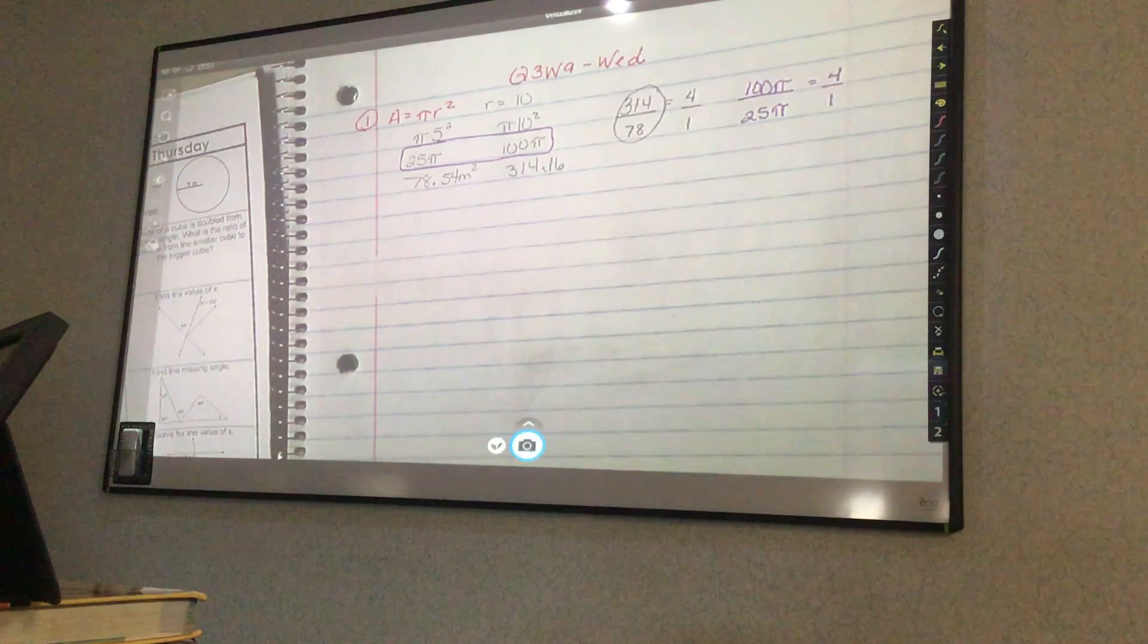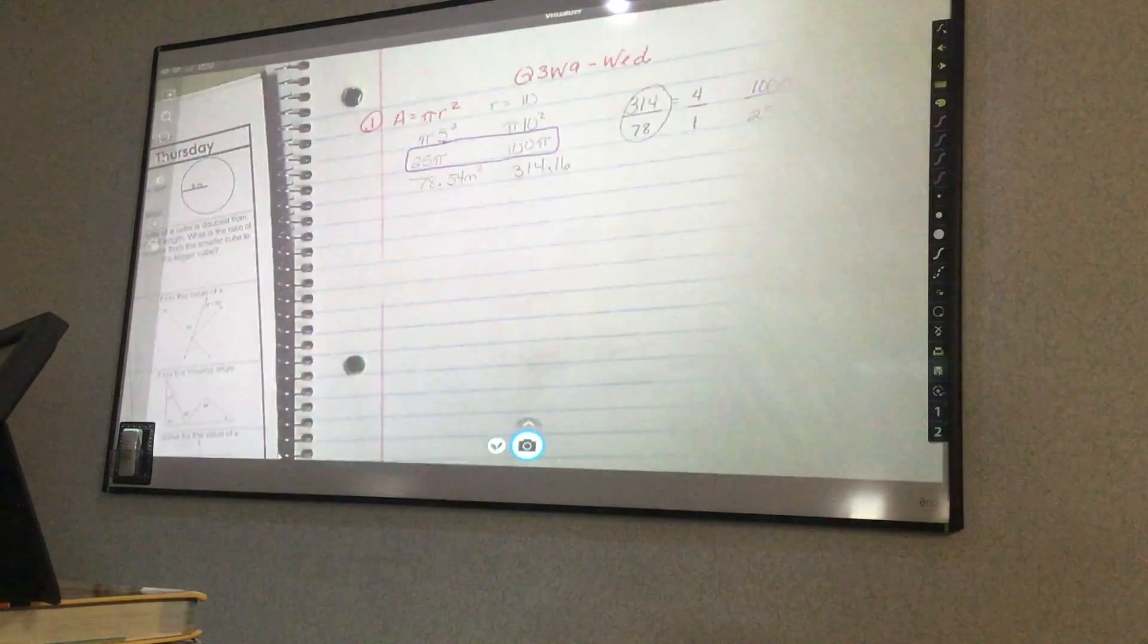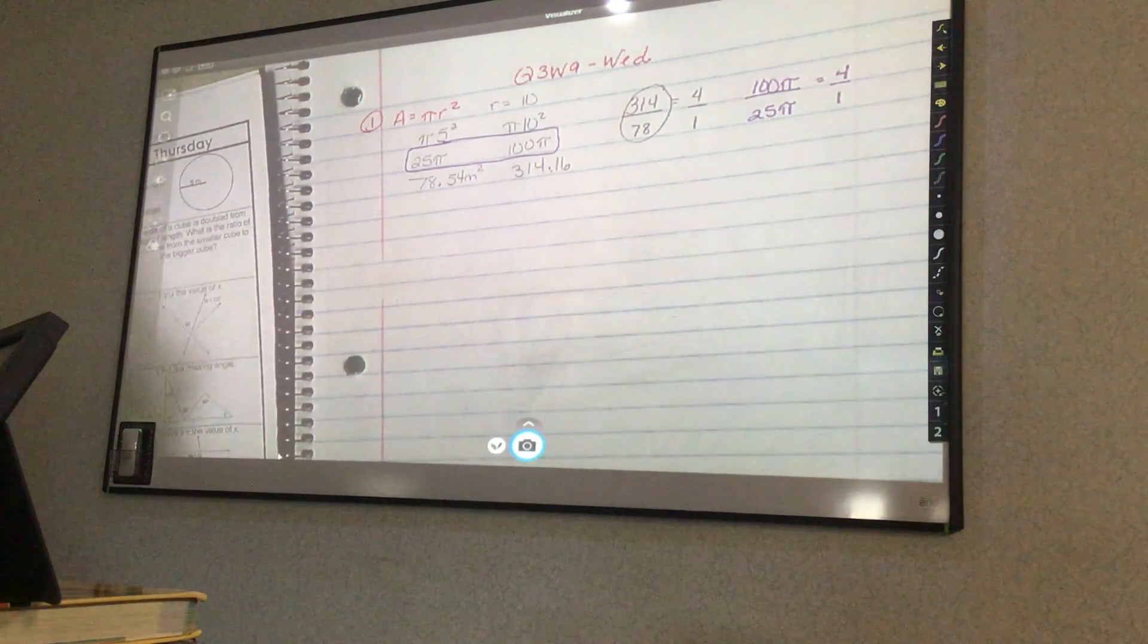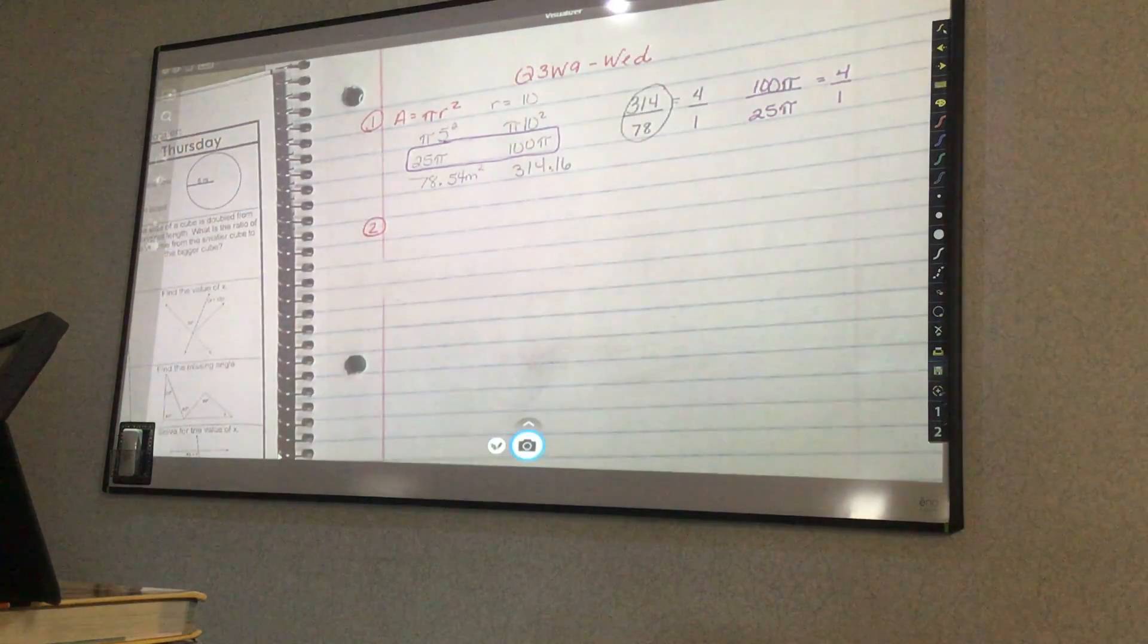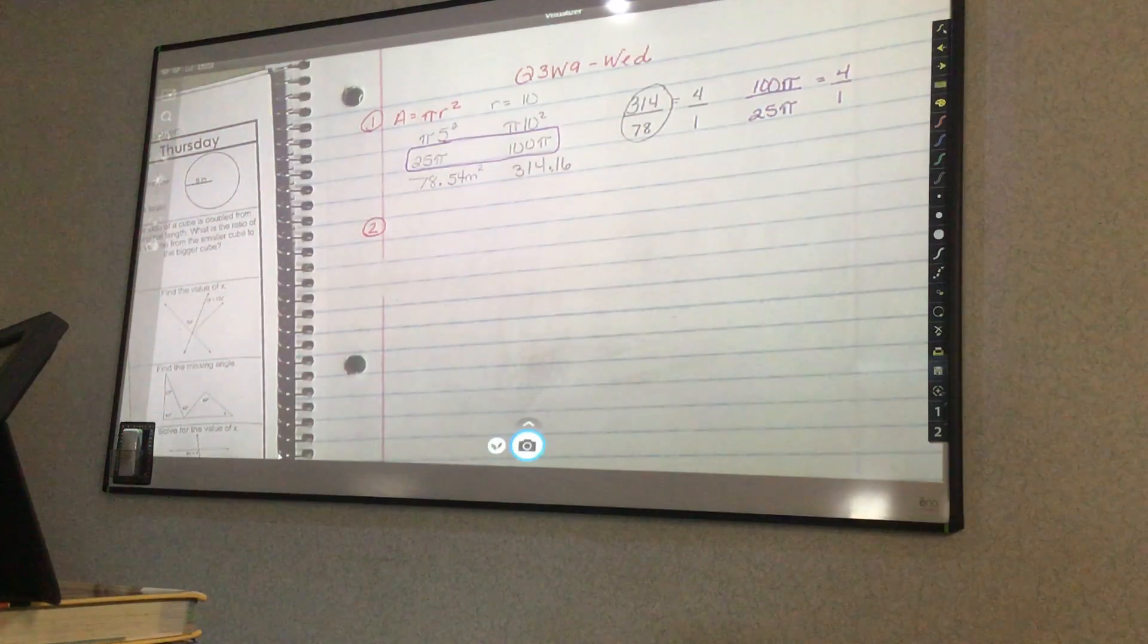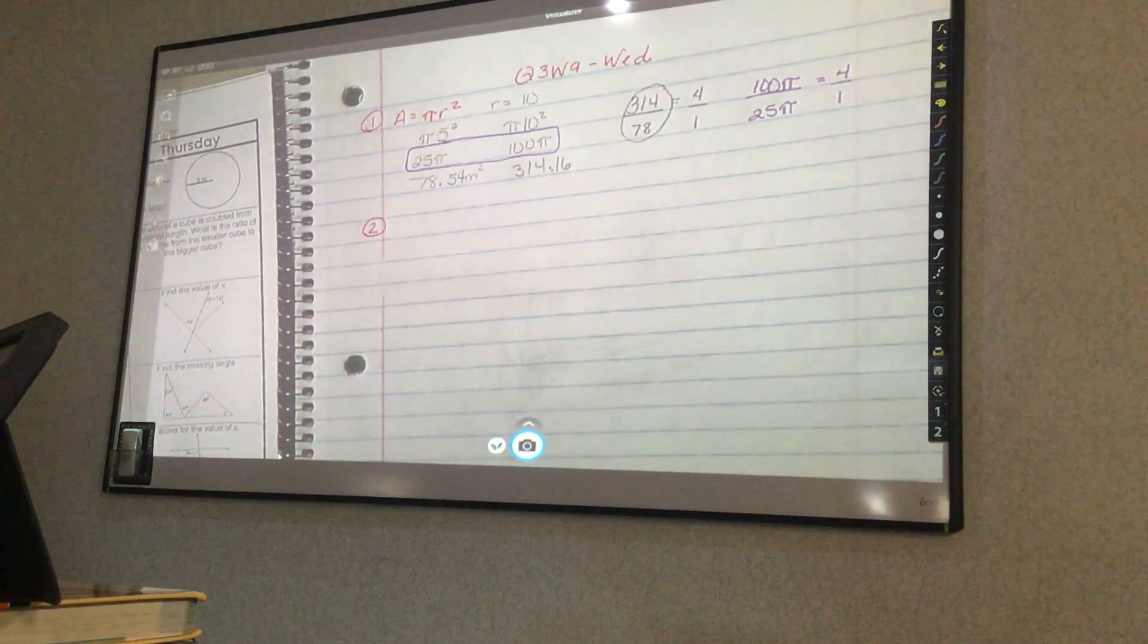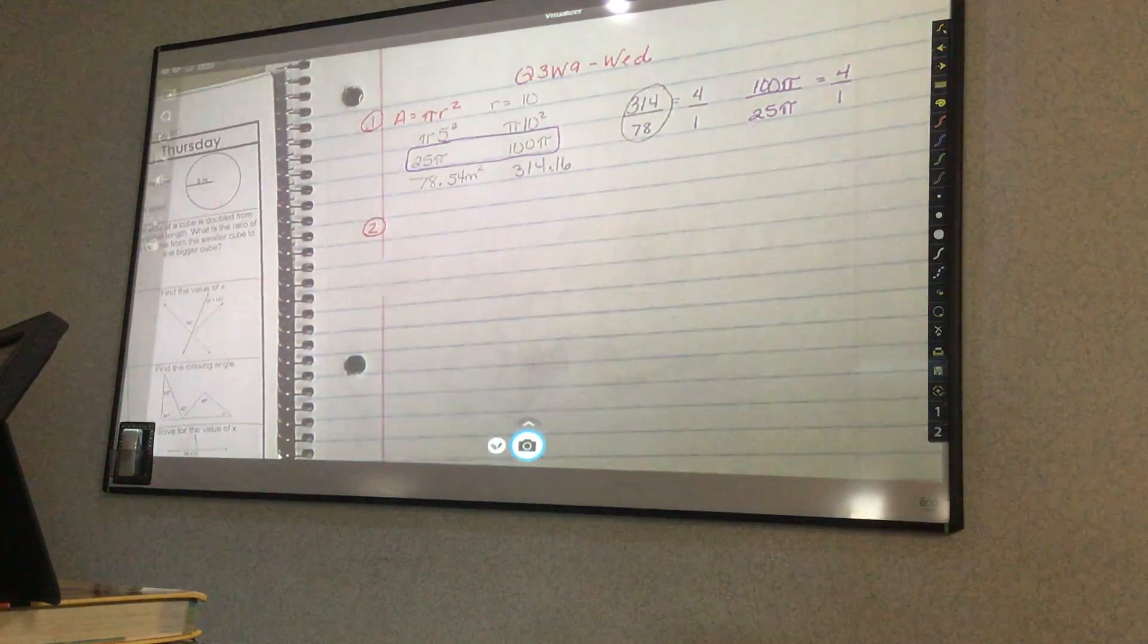Then you need to go get one. Number two. The side of a cube is doubled from its original length. What is the ratio of the volume from the smaller cube to the... Wait, I'm doing the wrong problem. Sorry, that's tomorrow.